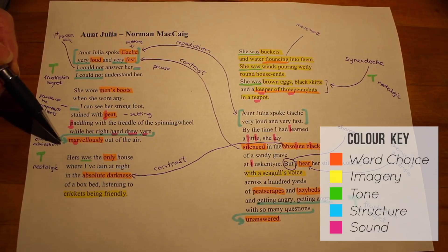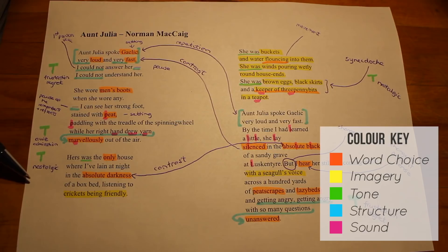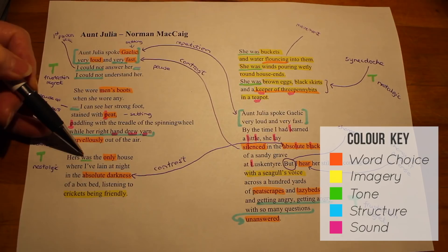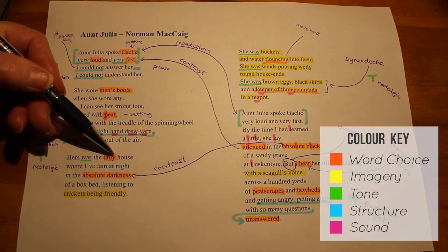Marvelously. He admires his aunt. He's fascinated by this magic she can create by taking wool and turning it into yarn. And then moving on, the nostalgic tone increases again. It tells us that hers was the only house. Was is interesting, it's the past tense still here. Hers was the only house. And that tells us that he felt comfortable here, because he says it's the only house where he's laying at night in the absolute darkness.